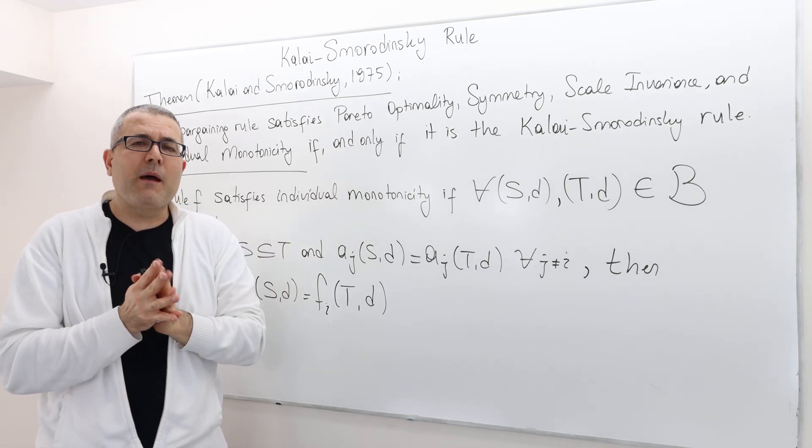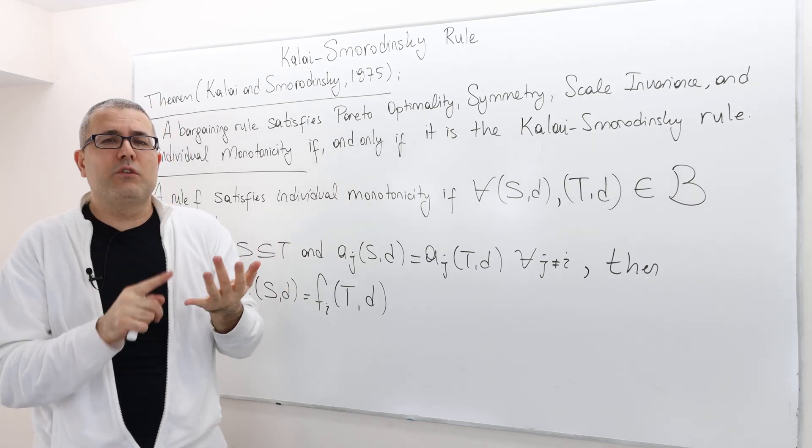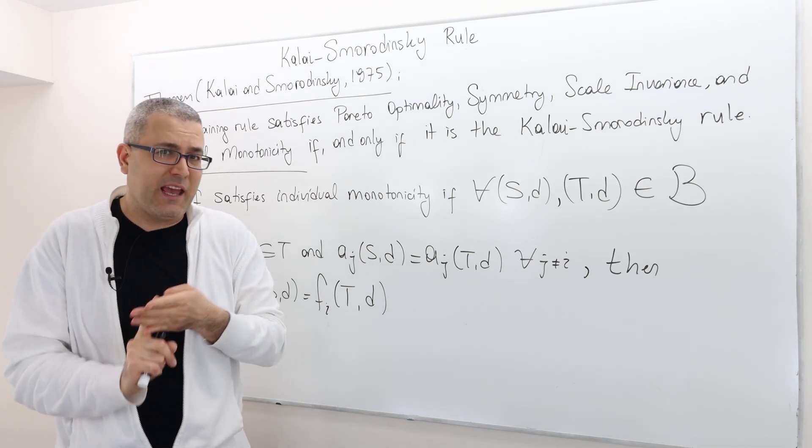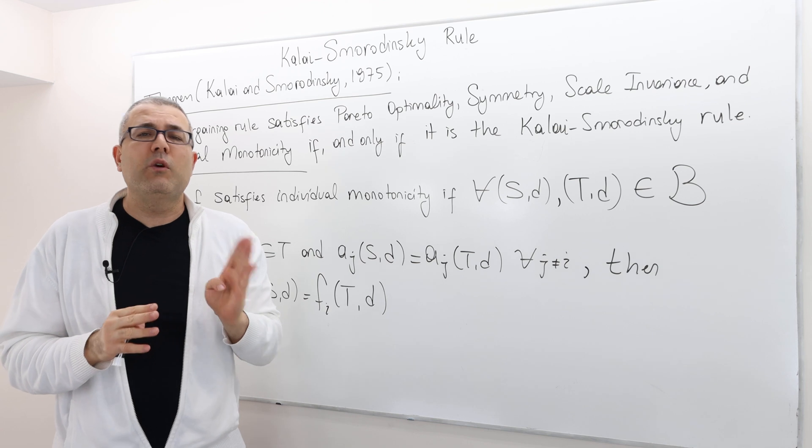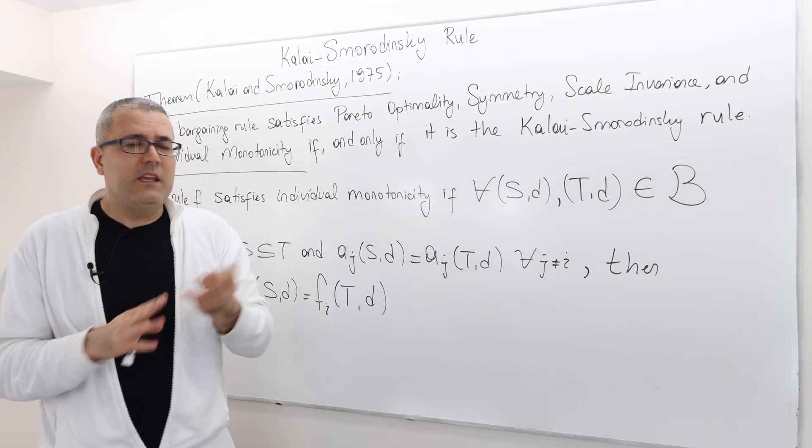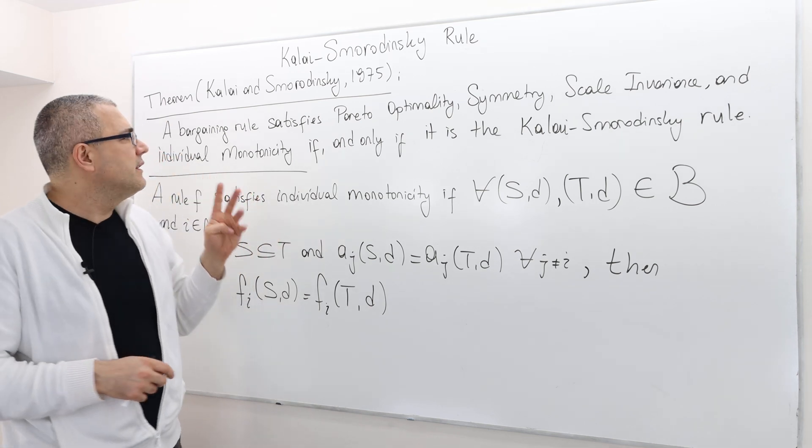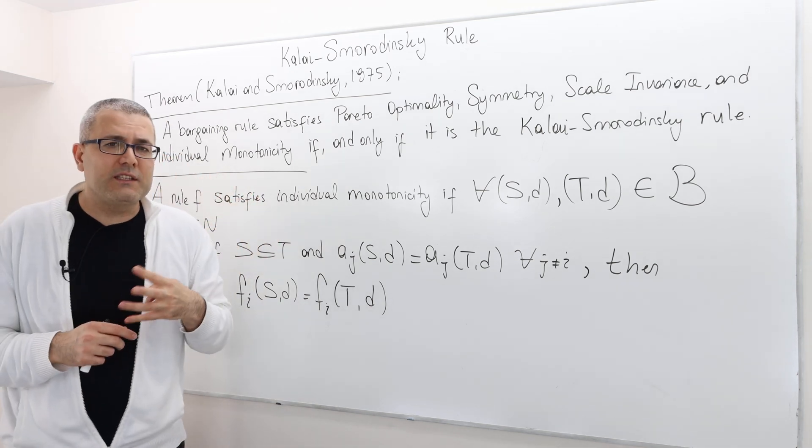So remember that Nash was saying if you're looking for Pareto optimality, symmetry, scale invariance, and IIA, well then you have to use Nash bargaining rule. Here, however, what's different, we don't have IIA. Instead, we have individual monotonicity.